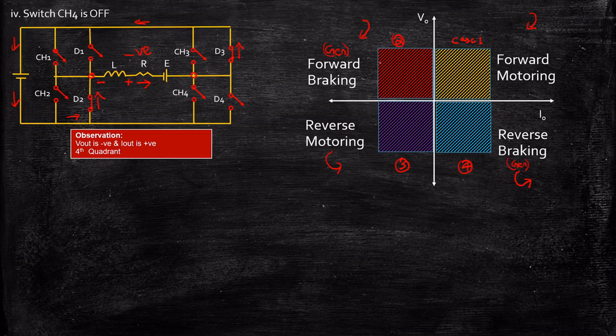If you want only two quadrant operation you can go for Type C or Type D. If you want all four quadrant operation, go with Type E — the four quadrant chopper. I hope this video gave you a clear understanding of how to analyze a four quadrant chopper. Feel free to ask questions in the comments below, and please do give your valuable feedback. Thanks a lot. Stay tuned.